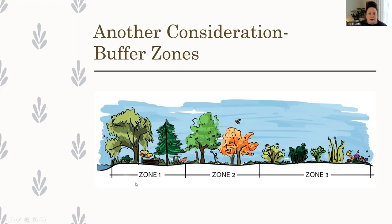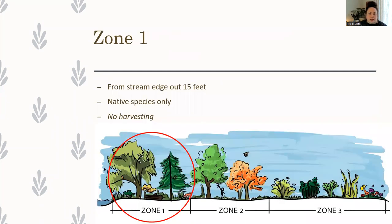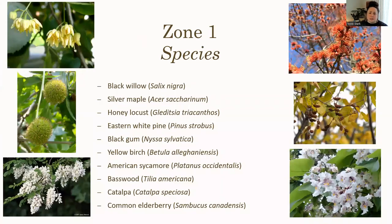Buffers have typically three zones. Zone one is the immediate riparian zone right next to the water — at least those very first 15 feet. We want native species only here, and we don't want to plant things we're going to harvest from because we don't want to disturb that sensitive stream bank soil that is really prone to erosion. Zone one species include black willow, silver maple, honey locust, white pine, black gum, yellow birch, sycamore, basswood, catalpha, and common elderberry — things that prefer to have wet roots and be right next to the stream in those damp areas.